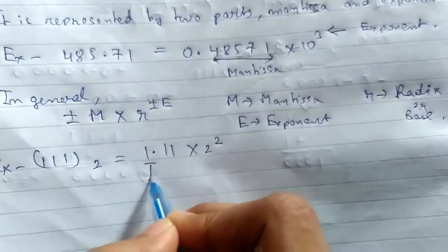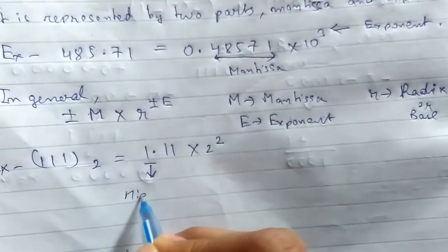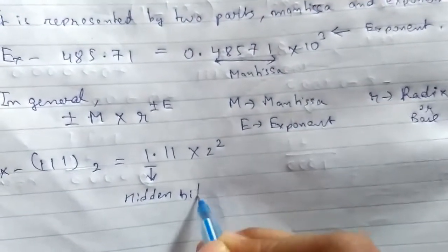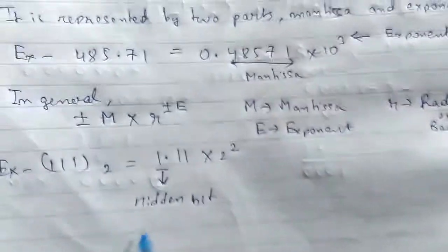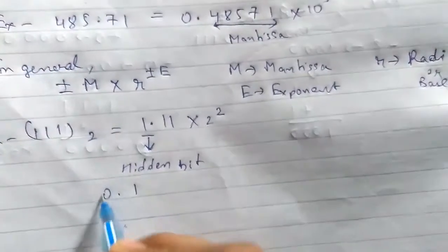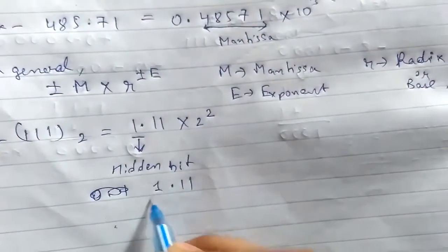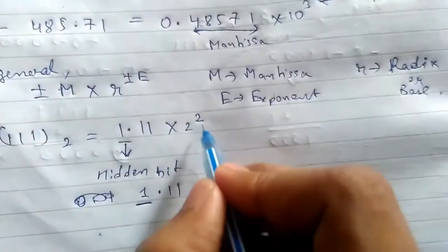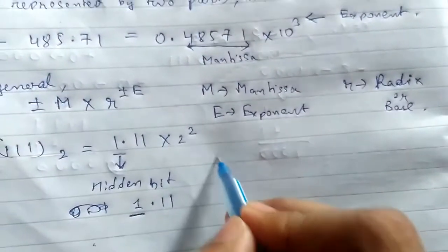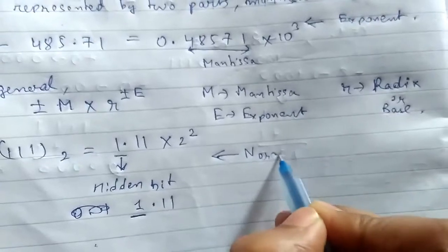This one here is the hidden bit. If it is not given, then we have to consider that before the decimal there is one always present. Suppose if it is a number like 0.11, we need to assume that here it is 1. So this is the hidden bit and this is normalized representation, which we will study in the next video lecture.